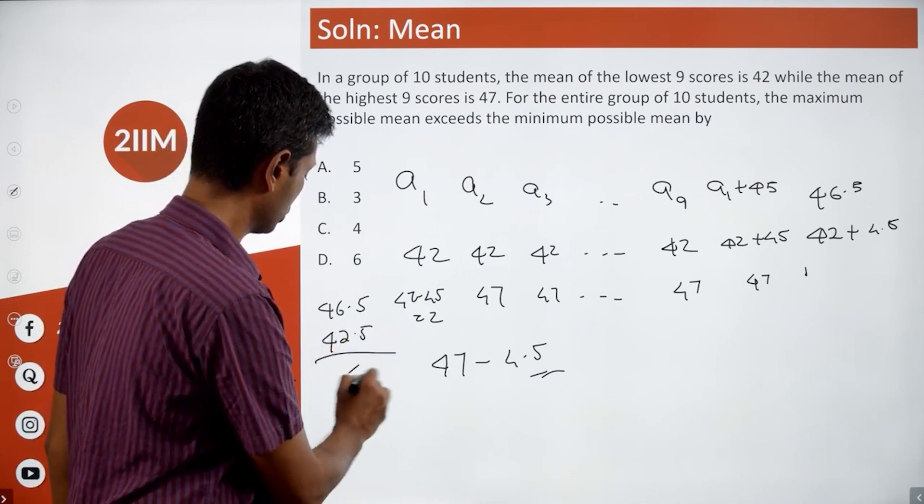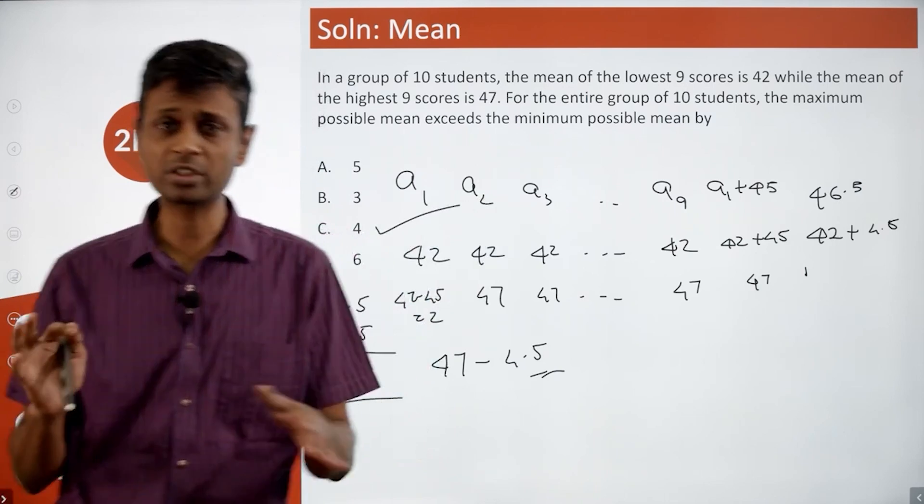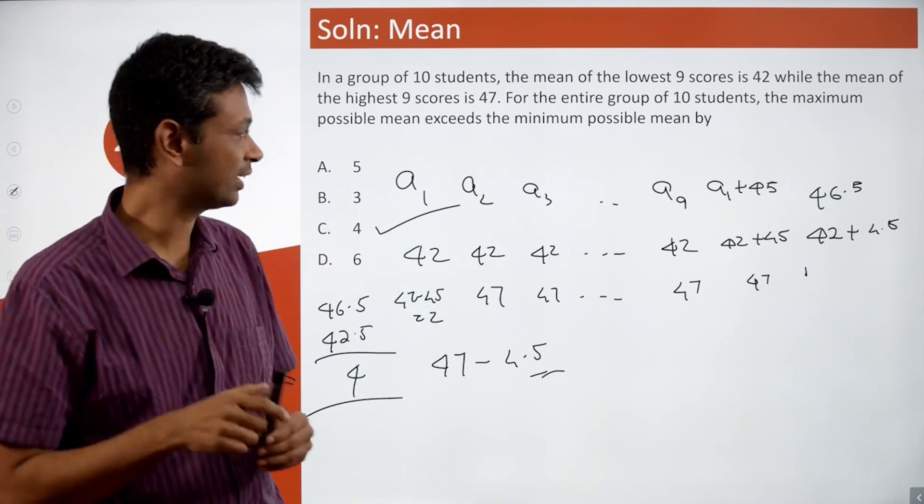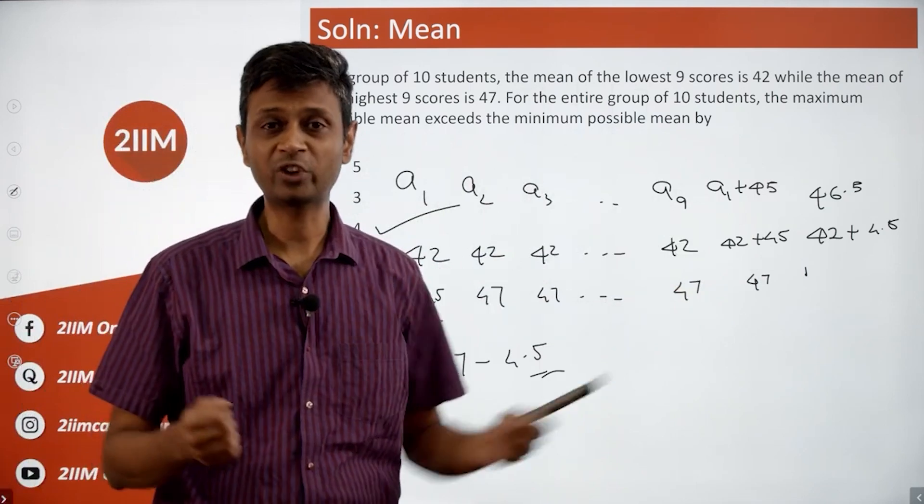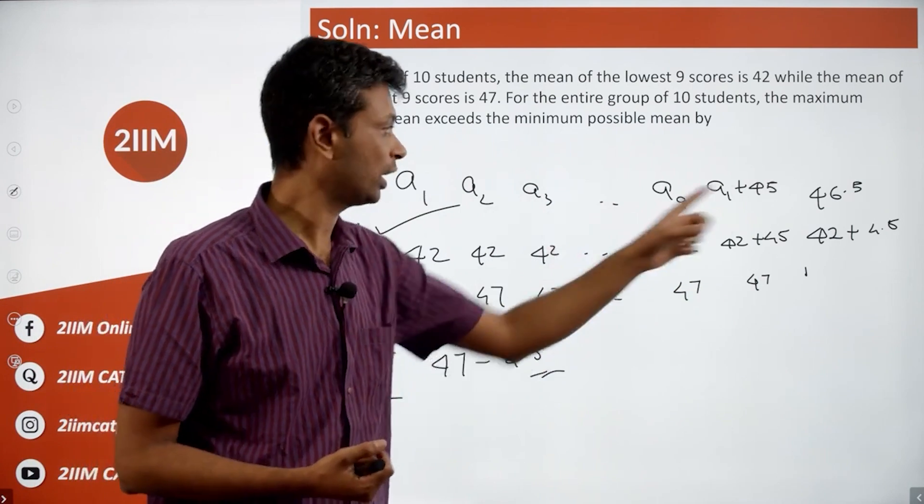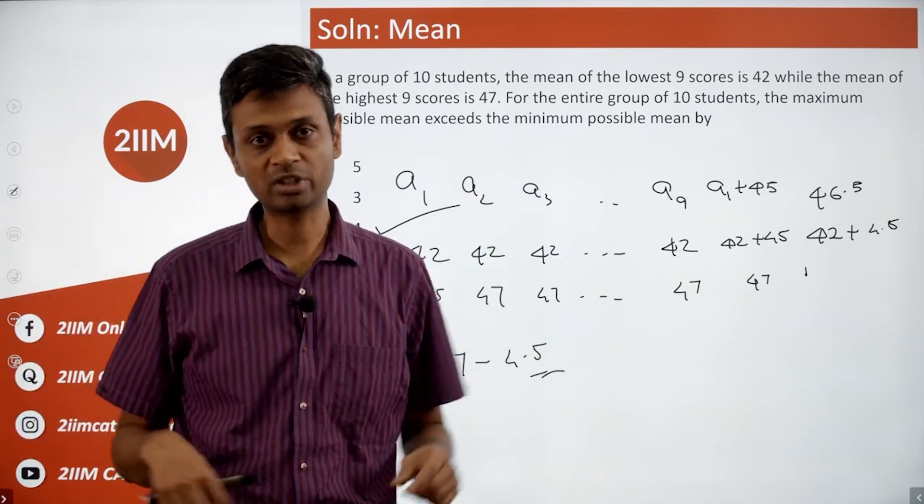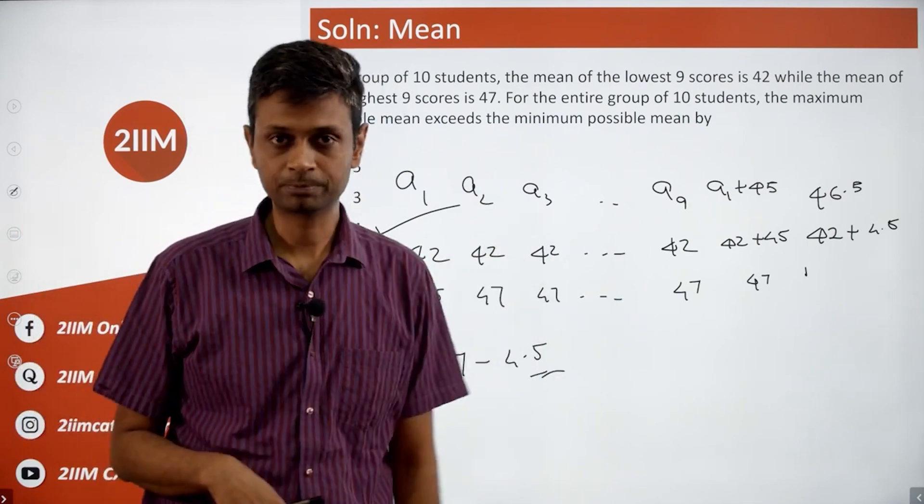The difference between these two is 4—that's the answer choice. Wonderful, delightful question! First, anchor that a10 is a1 plus 45. Then for either extreme, set a1 to a9 equal, or set a2 to a10 equal. Both extremes get discovered, and then you can find the maximum and minimum.